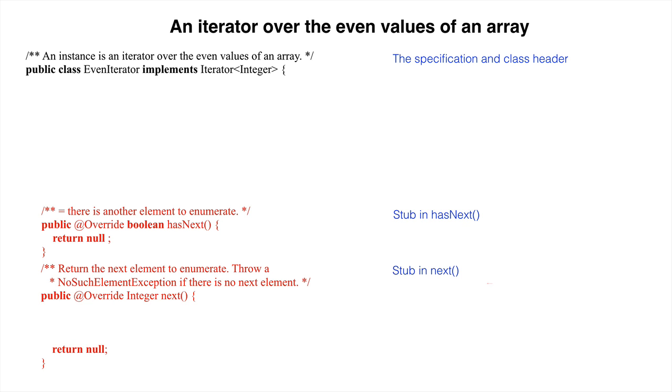The first statement of next throws the necessary exception if hasNext is false. Method next should always start with such a call on hasNext.